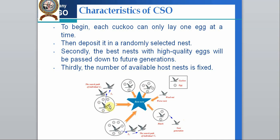The cuckoo starts searching and evaluates nests — for example, a nest with five eggs is not suitable for laying another egg. The cuckoo searches various nests using Levy flight, moving from one to another until it finds a suitable nest with fewer eggs, such as one with two eggs, and then lays there.